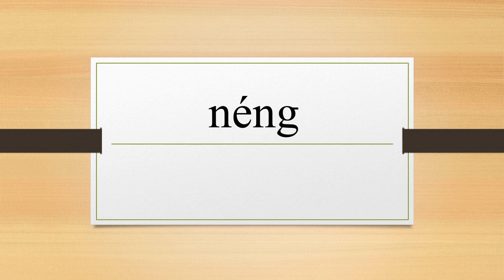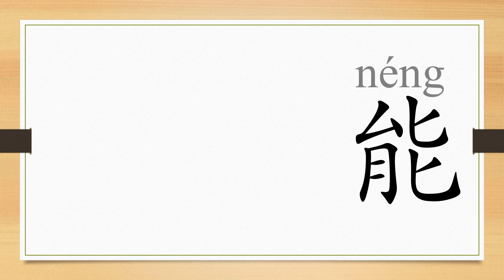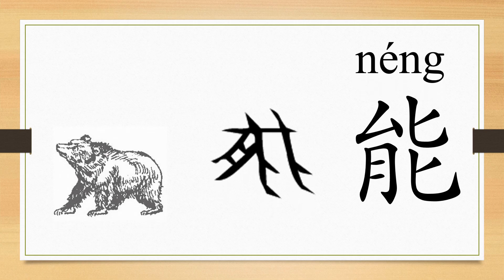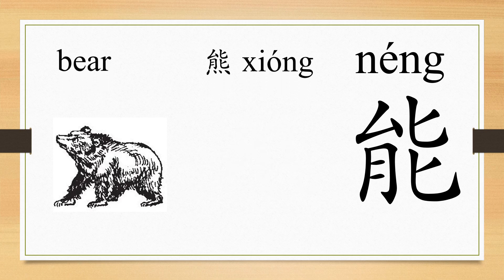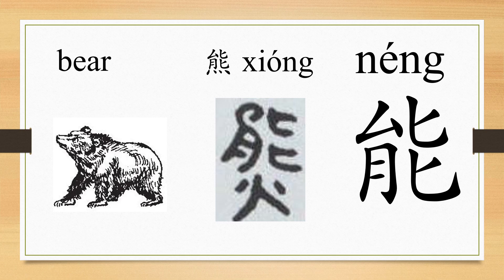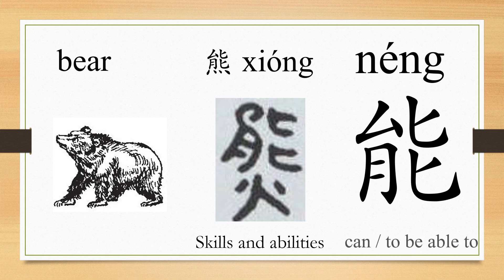Hello, today we are going to learn the character Neng (能). The character Neng comes from the image of the bear, so the original character for bear is Neng. People then created another character based on Neng — that is Xiong (熊) — to represent bear. Neng was later borrowed to indicate other meanings: skills and abilities. It then extended to the meaning 'can' or 'to be able to.'